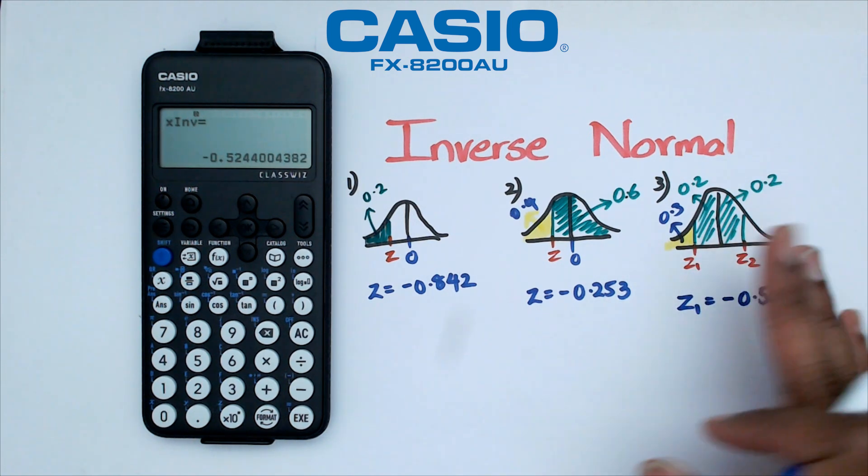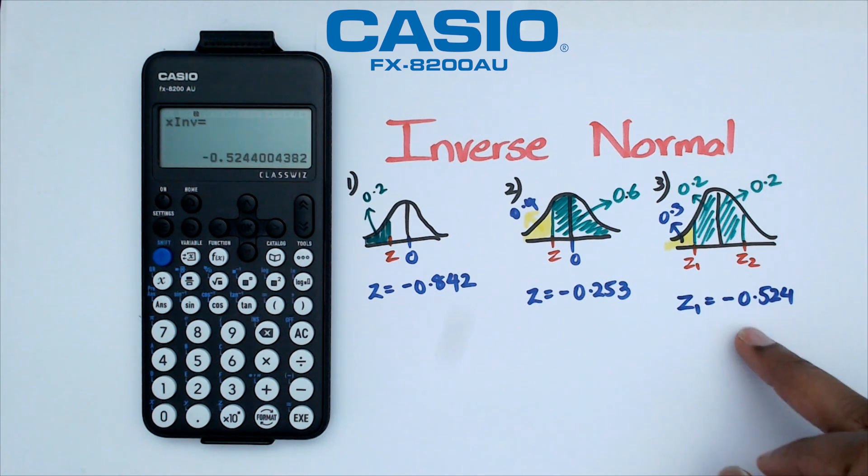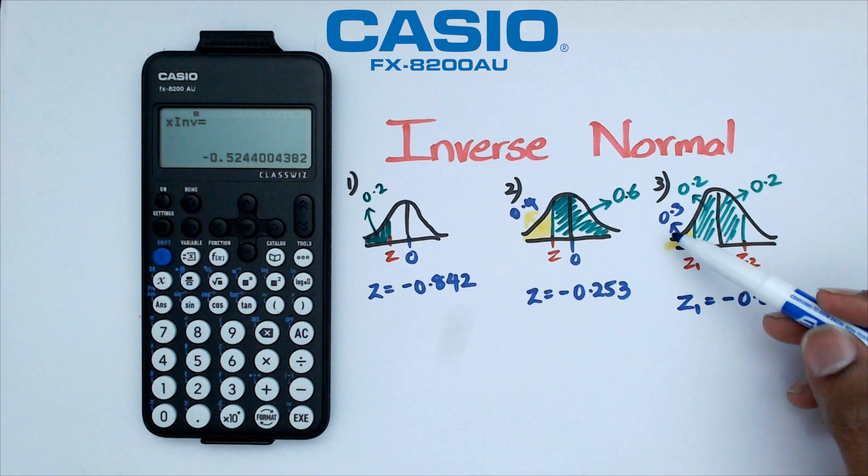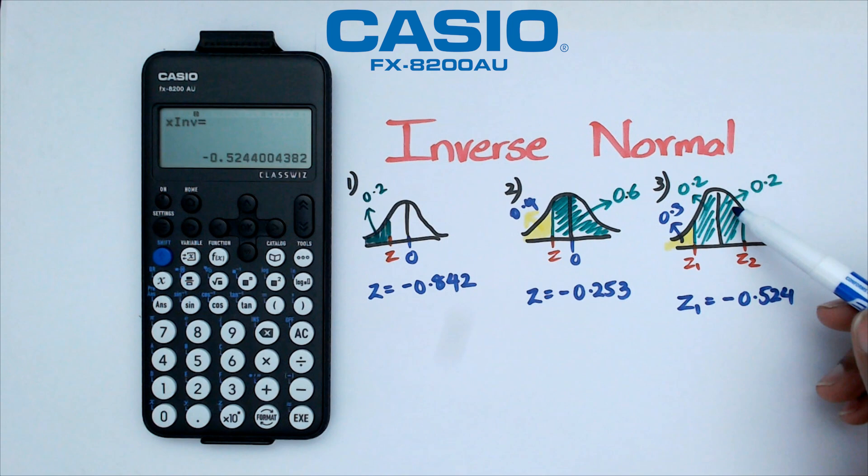Now according to symmetry we know that Z2 is going to be positive 0.524 but what we are going to do is we're going to check that and what we're going to do is we're going to add up all three of these areas together. So it's 0.3, 0.2 and 0.2, yep 0.7.